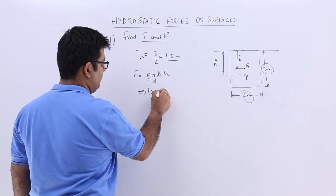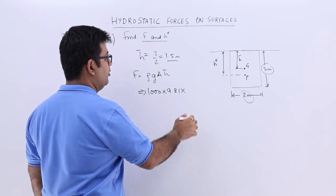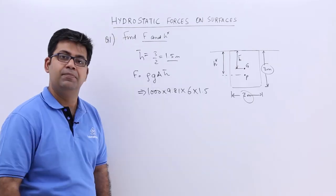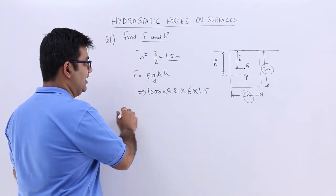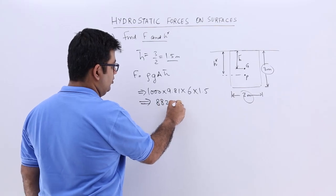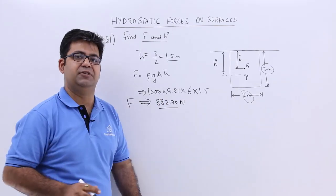you have 1000 into 9.81 into area would be 6 and then 1.5 meters as the h bar. So the entire value would give you 88,290 newtons. So this is the total pressure force.